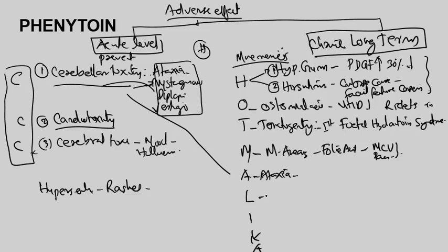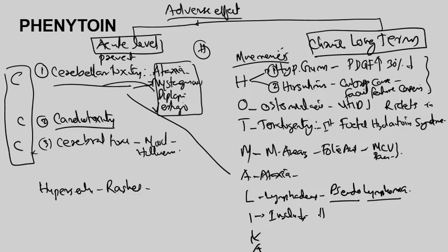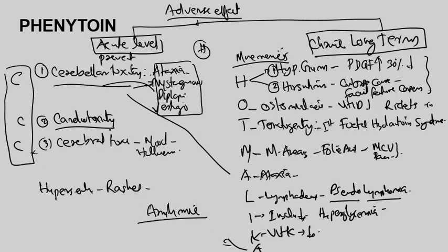L is for lymphadenopathy — pseudo-lymphoma — where lymph nodes swell mimicking lymphoma but it is not actual cancer. I is for inhibition of insulin secretion, leading to hyperglycemia and raised blood sugar. K is for vitamin K-related coagulation abnormality causing bleeding and hemorrhages. A is for arrhythmia — reflecting phenytoin's cardiovascular toxicity.